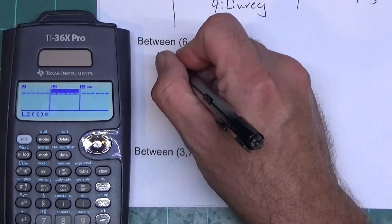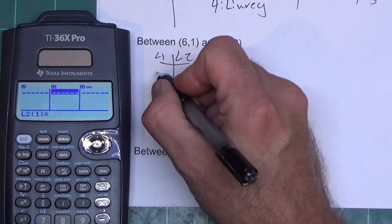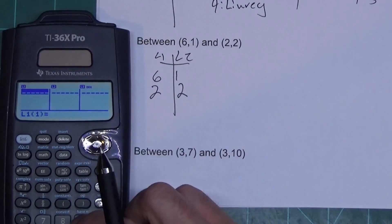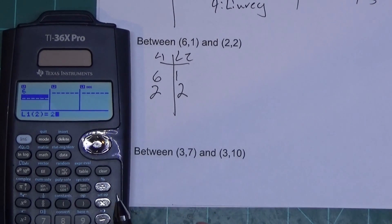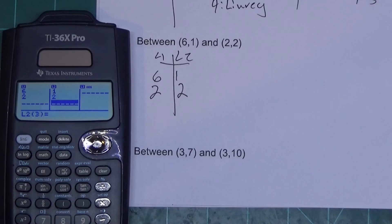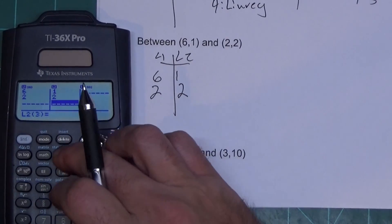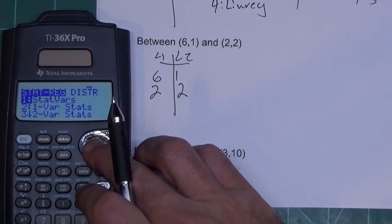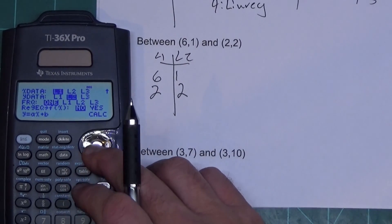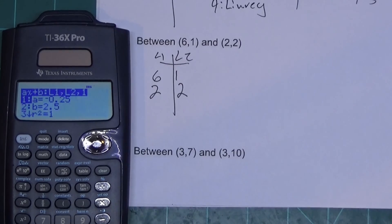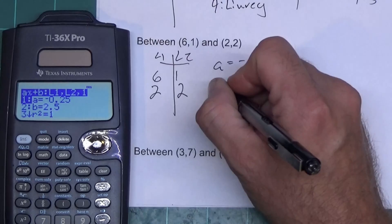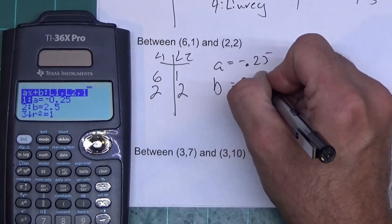So in L1 we're going to put the x's, in L2 we're going to put the y's. So this is 6 and 2, 1 and 2. So over here I'm going to put 6 enter, 2 enter. Over here I'm going to put 1 enter, 2 enter. Then I'm going to put 2nd data. We're going down to number 4 for L1. You can actually press number 4. Everything should be fine. I'm going to hit calculate.